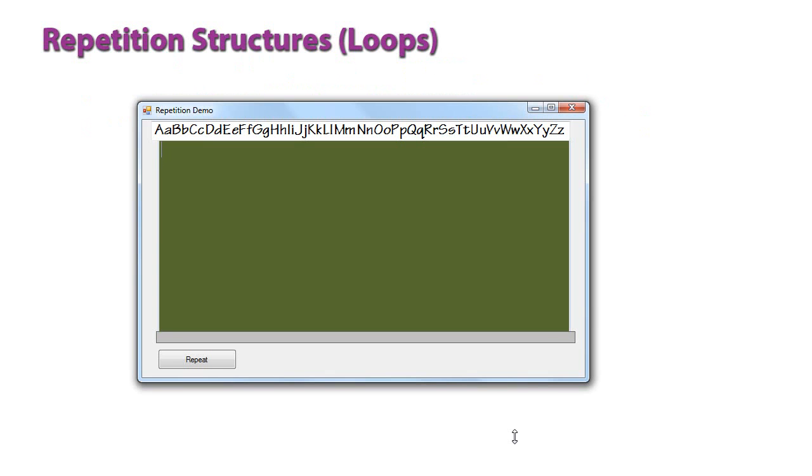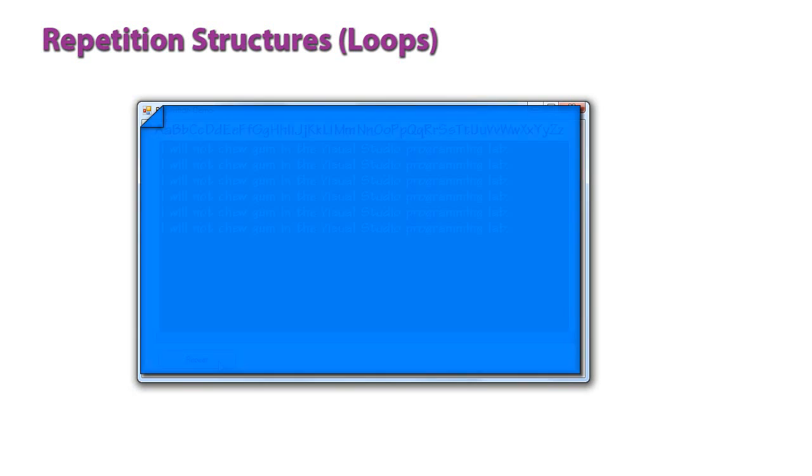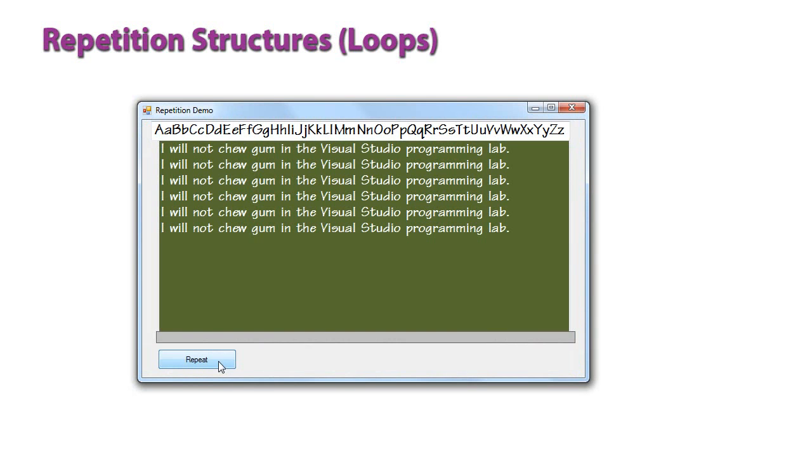Just to give an analogy to a loop structure, a student has to stay after class and write a sentence on the board X number of times. And so I have a little button here that says repeat. And it's going to write a phrase on my virtual blackboard here of, I will not chew gum, and I've set this up to do that six times.